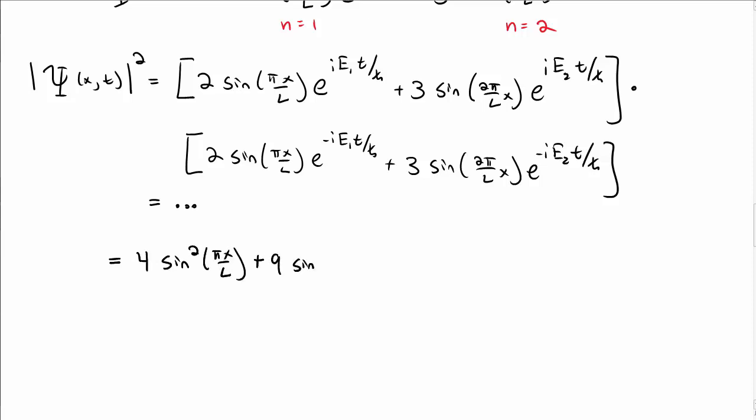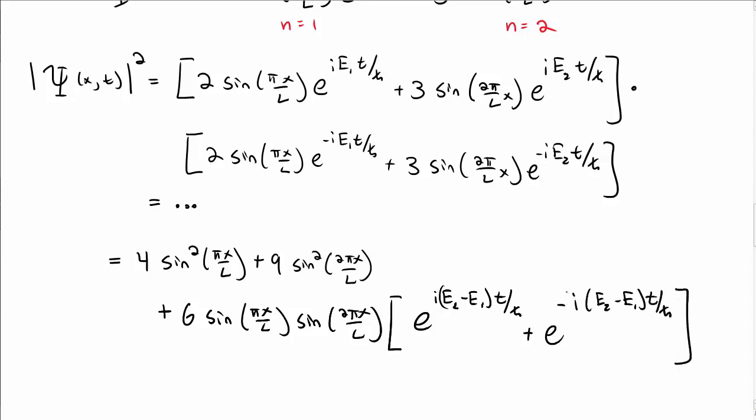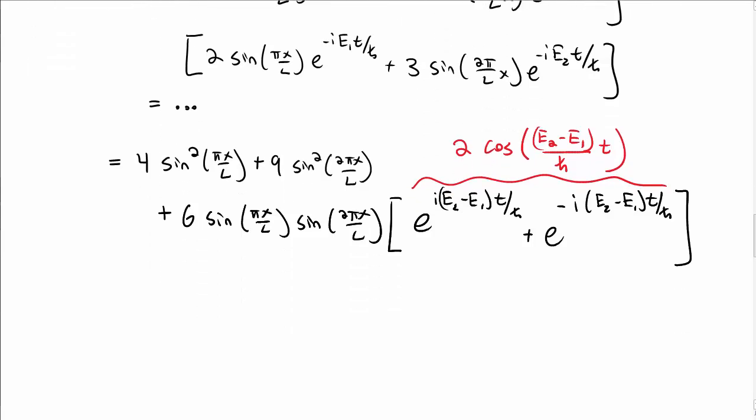So I get 4 sine squared of πx over L, 9 sine squared of 2πx over L, and then I get a term that mixes the n equals 1 and n equals 2 states. And for that I get an e to the i(E_2 - E_1)t over ℏ plus e to the minus of that. If you stare at that, you'll notice that that is 2 cosine of (E_2 - E_1) over ℏ t by Euler's formula.